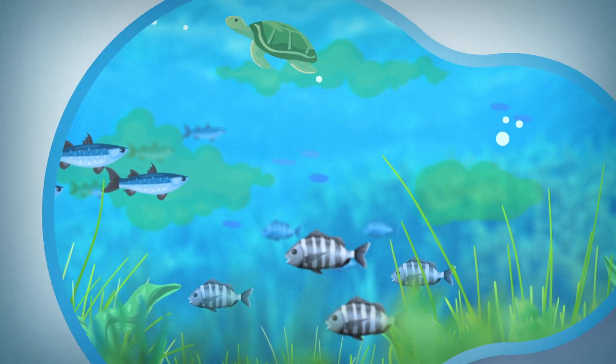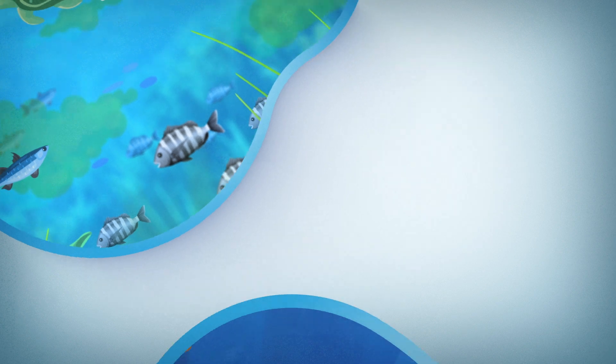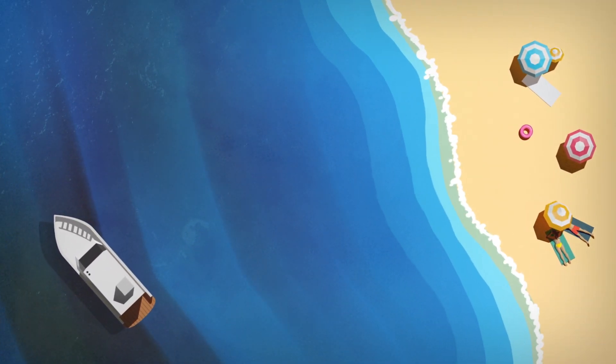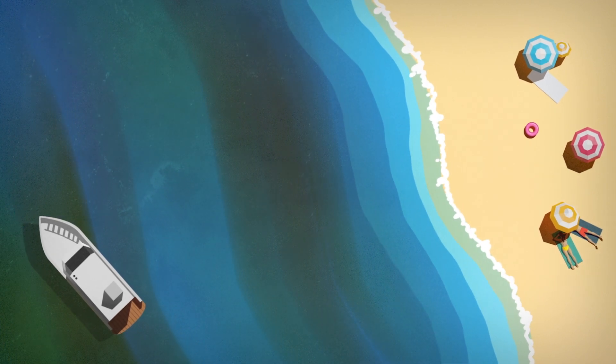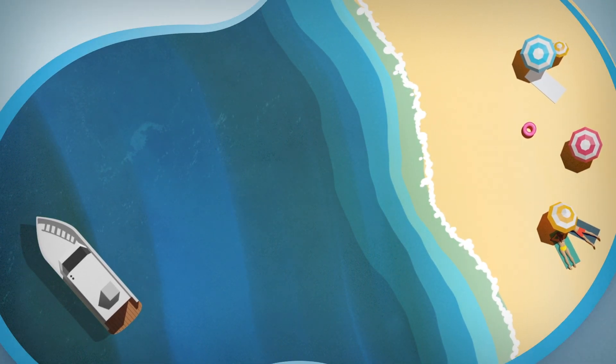But there are some microscopic algae commonly referred to as red tide, and when they reach high concentrations can cause harmful algal blooms that give the water a red, brown, green, yellow or even pink tinge.